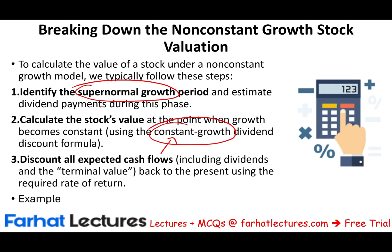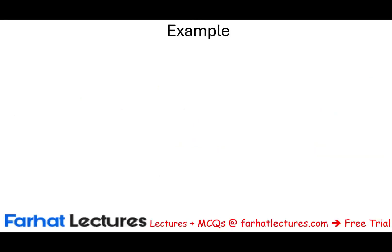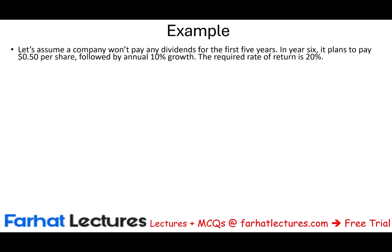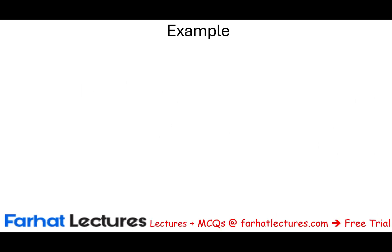The best way to illustrate this is to work through examples. It's pretty simple. If you understand the time value of money and the constant growth model, you already know how to deal with this — especially if you know how to deal with deferred annuities. The best way is to look at various examples.